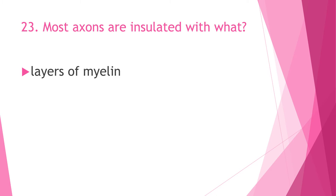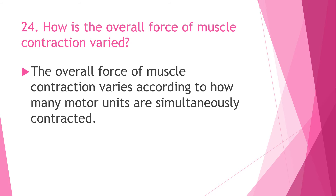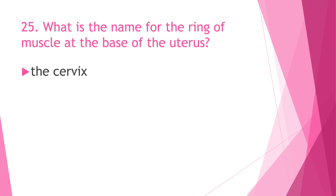Question 23: Most axons are insulated with what? The answer is layers of myelin. Question 24: How is the overall force of muscle contraction varied? The overall force of muscle contraction varies according to how many motor units are simultaneously contracted.